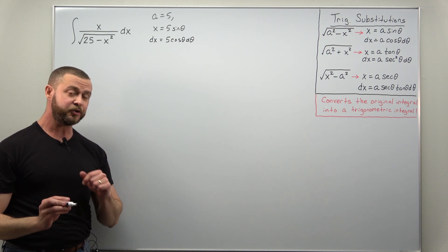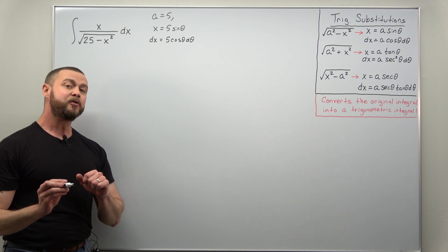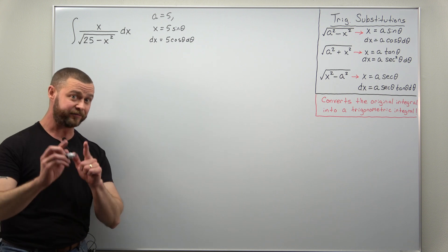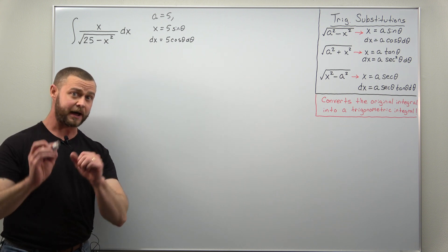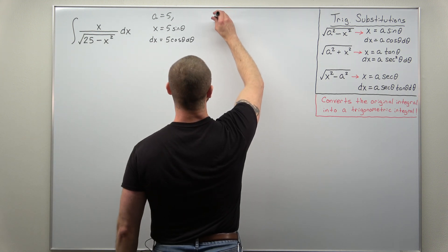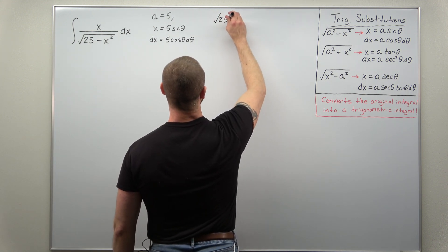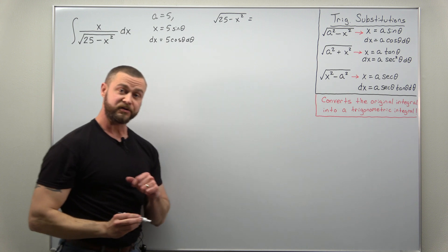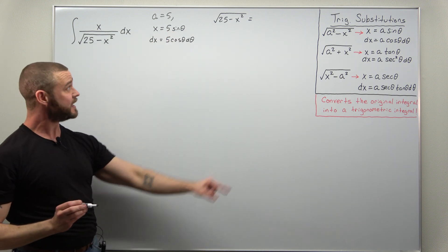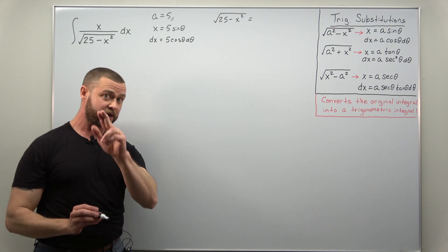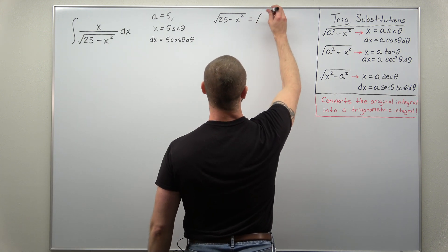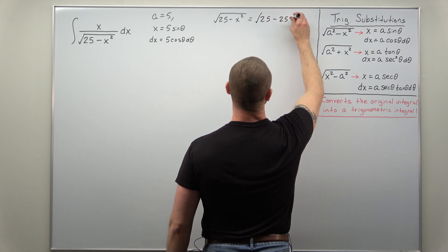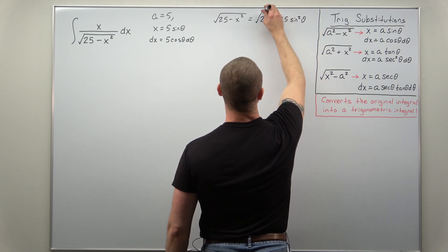The whole goal with this trig substitution is to get the radical or square root to cancel. Let's simplify the square root first before plugging everything in. We substitute x as 5 times sine theta, and since that's x squared inside, we square both 5 and sine theta. So we have the square root of 25 minus 25 times sine squared theta.